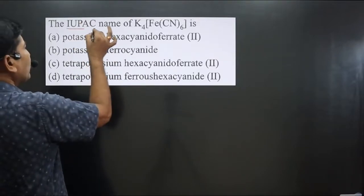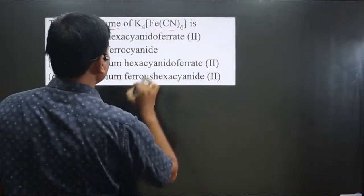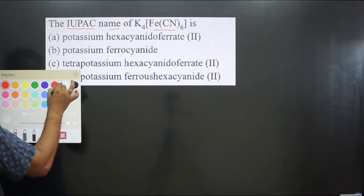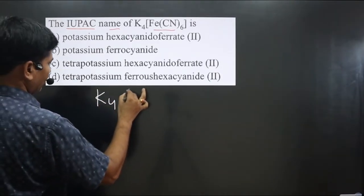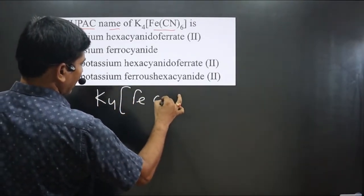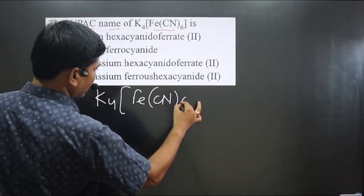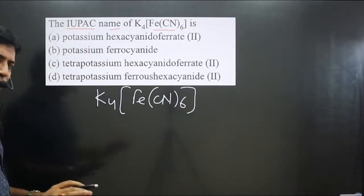The question asks the IUPAC name of the complex given here. The complex is K₄[Fe(CN)₆]. Let me write it down and work through the naming.